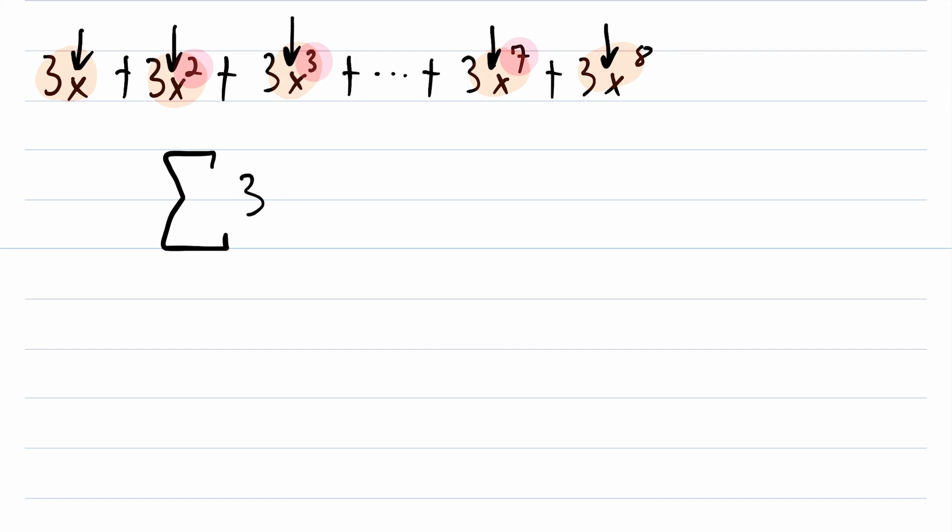x isn't changing throughout this whole sum, but its exponent is. So, three is always being multiplied by x, and x is being raised to a different power each time. So, our index variable is going to be the exponent of x, and we'll use an n this time, just so you know you don't always have to use the same variable.